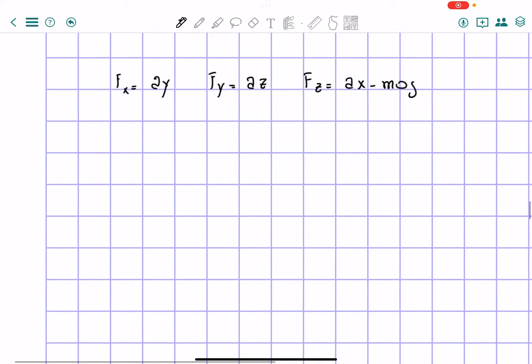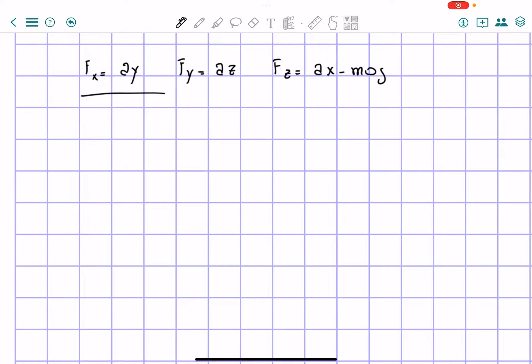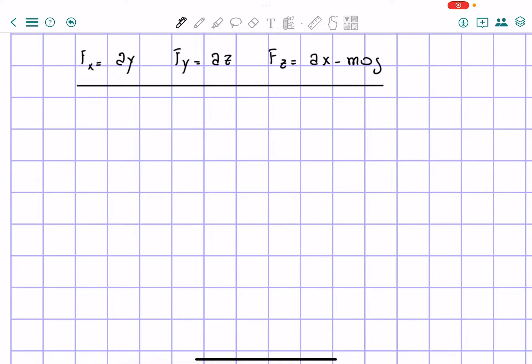So we can see that this function is not conservative. And I'm asked to find the work that it takes to move from a point O, which is the origin, so 0, 0, 0, to the point P.